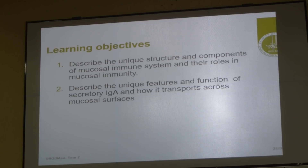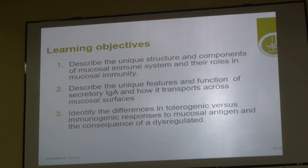IgA has some specialized production method. Why it is specialized — specially produced in the mucosal immune system — we will see that. And then finally, another interesting situation of the GIT is that there are a lot of commensal bacteria.